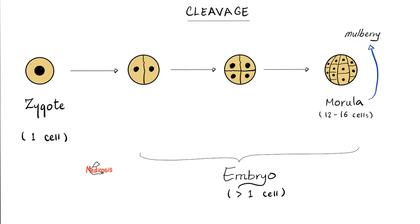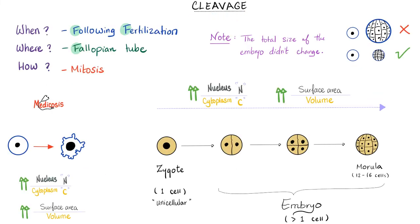Morula is Latin for mulberry — not to be confused with the blueberry muffin rash seen in congenital rubella syndrome. When does cleavage happen? Just following fertilization. Where? In the fallopian tube. But how? By mitosis: one, then two, then four, then eight, then 16, and so on. Have you noticed the size of the circle did not increase? It's just the number of cells within that structure that has increased, so the total size of the embryo did not change.